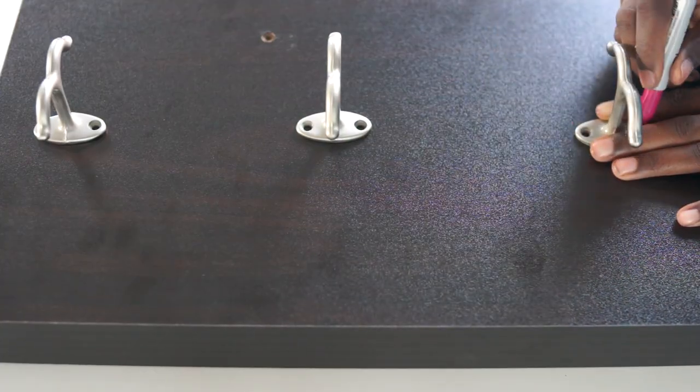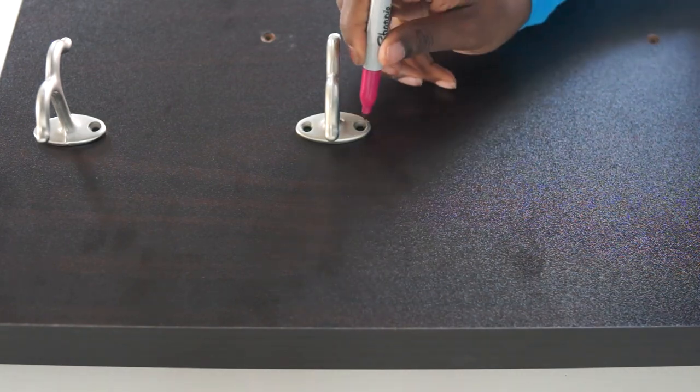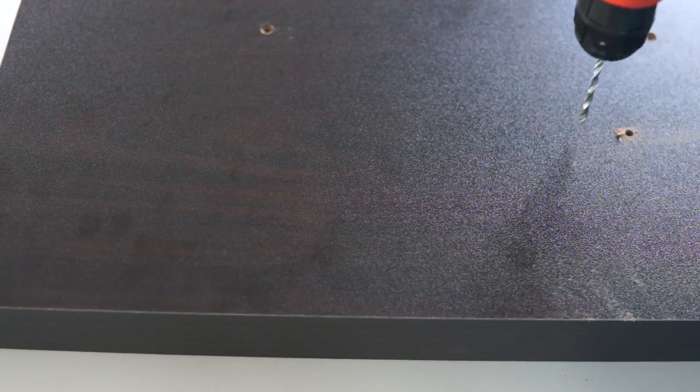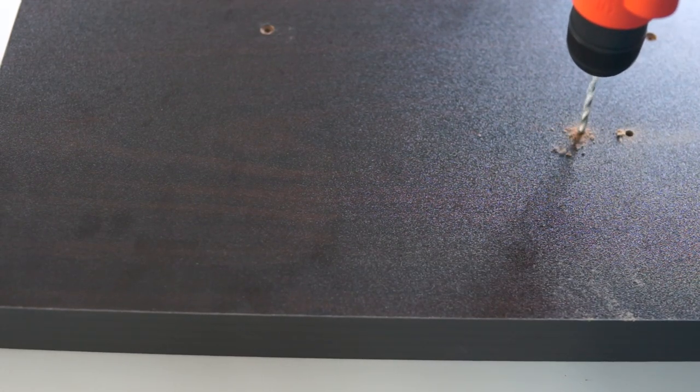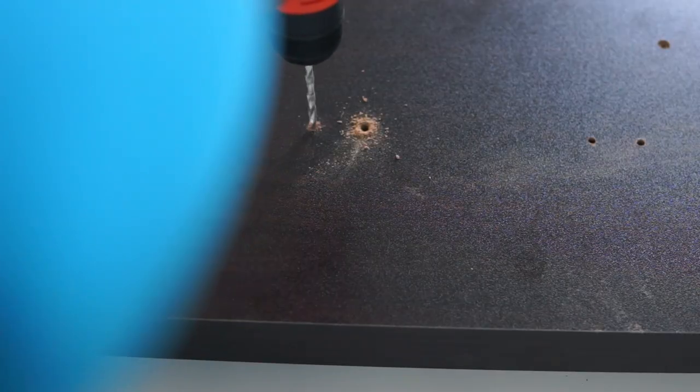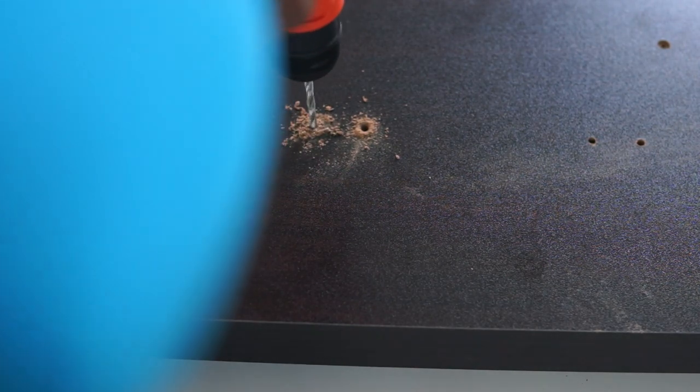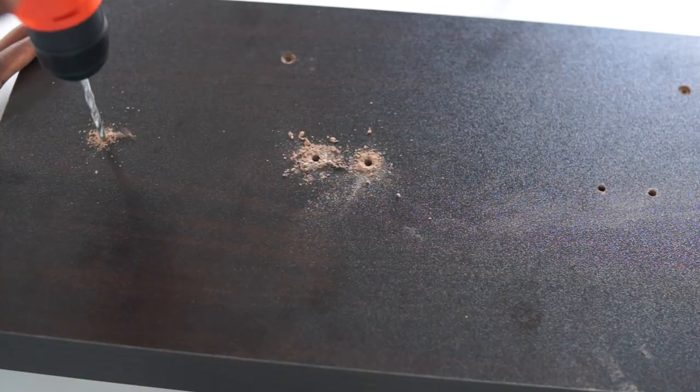I used a permanent marker to mark where I was going to drill holes into the shelf. You might want to make sure that you use the correct drill bit for the right size of anchors, and also make sure that you don't drill all the way through the shelving.